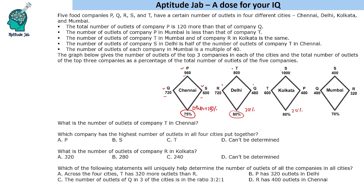We will formulate a table, fill in the values, and figure out the number of outlets of each of the companies based on the given conditions. One of the questions asks which statement will uniquely help determine the number of outlets of all companies in all cities, meaning we may not be able to determine some answers. For the first question we should be able to determine the answer. So now let us look at the data and formulate a table.